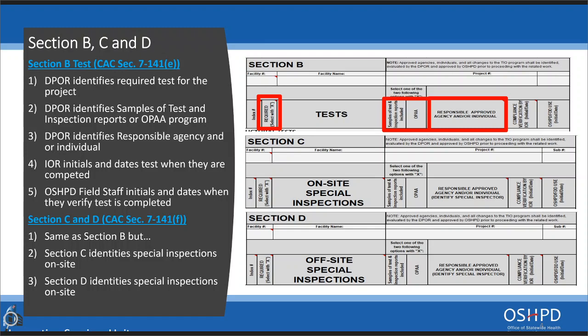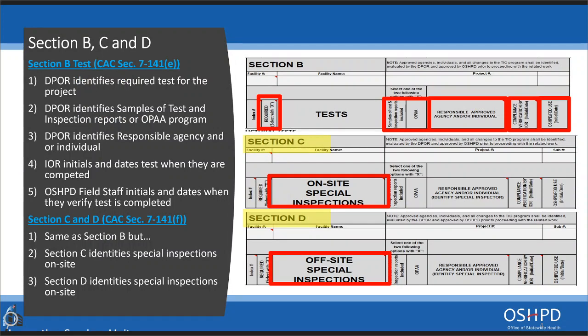The IOR identifies the responsible agency and/or individual who will be performing the tests and inspections, and indicates concurrence with the work of construction. If the inspection is performed by a special inspection agency, it is the IOR's responsibility to review the special inspection report to ensure the work passed. OSHPD field staff will initial and date their box only when they verify that the specific test is completed and all special inspection reports, IOR daily reports, and/or VCRs have been recorded. Section C covers special inspections on-site and Section D covers special inspections off-site.